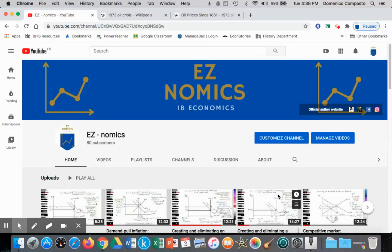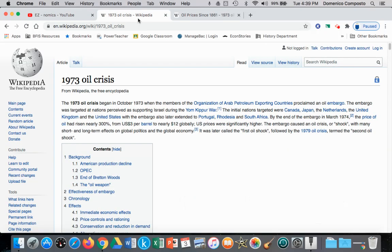We've looked at demand pull inflation as applied to the monetarist and the Keynesian model, and now we're going to look at cost push inflation. The applied example is a common example I've used before to illustrate supply shocks. This is a classic case study on a supply shock, the 1973 oil crisis.